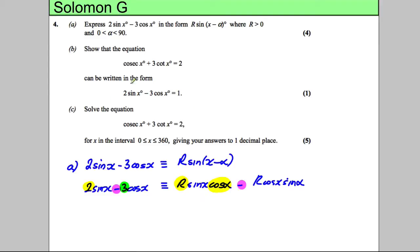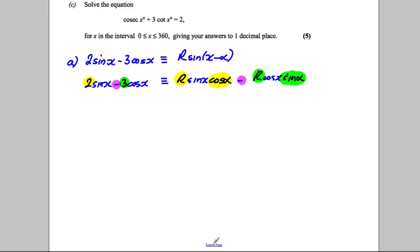So the coefficient of cosine x is 3. What's the coefficient of cosine x here? Well it's r sine alpha. So write our equations down. The first thing we can say therefore is that r sine alpha must equal 3, and we can state that r cosine alpha must equal 2.